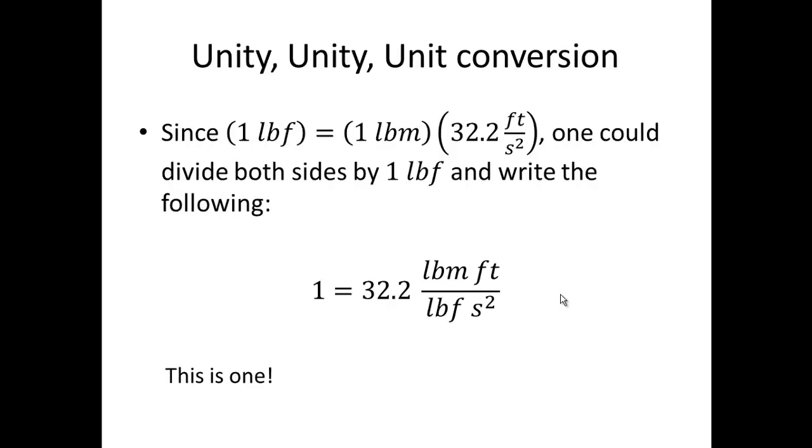Since one pound force equals one pound mass times 32.2 feet per second squared, one can take this equation and divide both sides by one pound force, and you would get one equals 32.2 pound mass feet per pound force second squared. This is one.